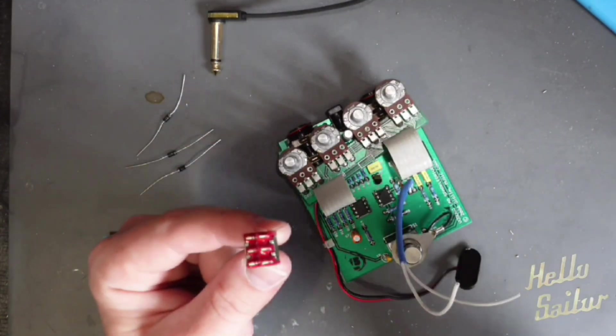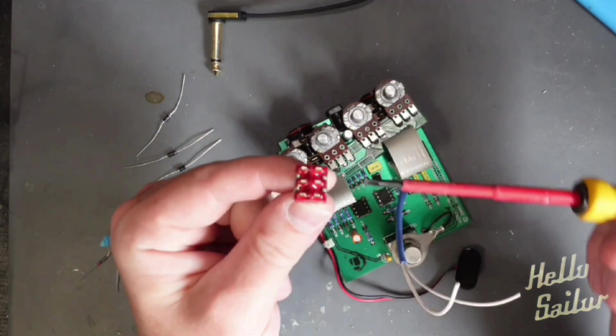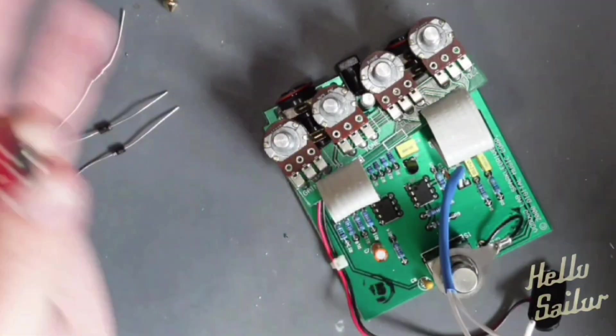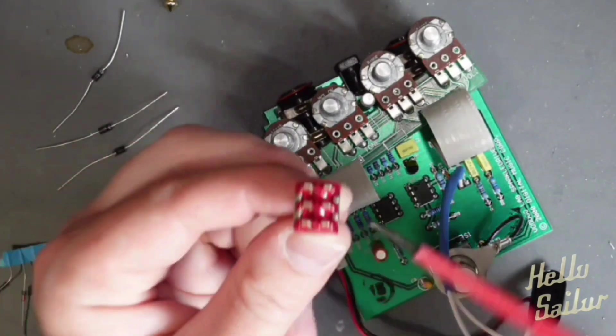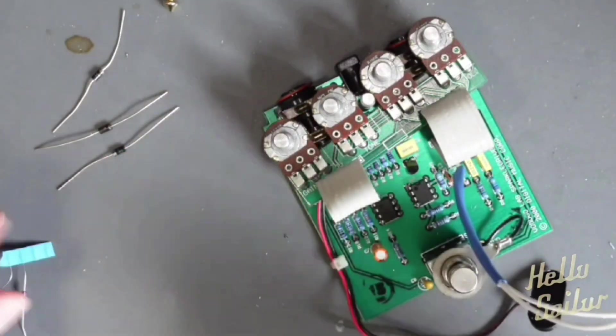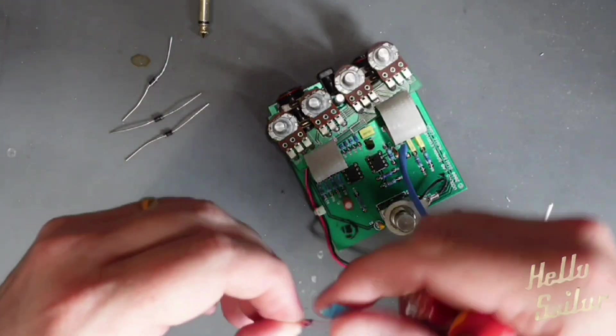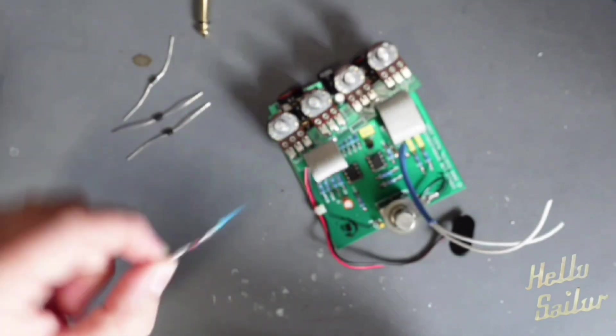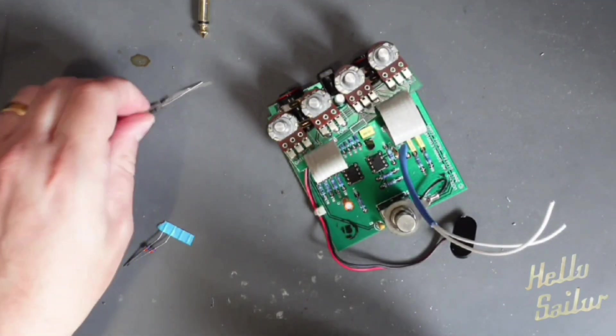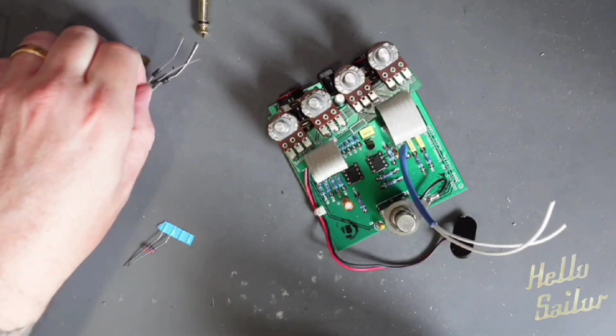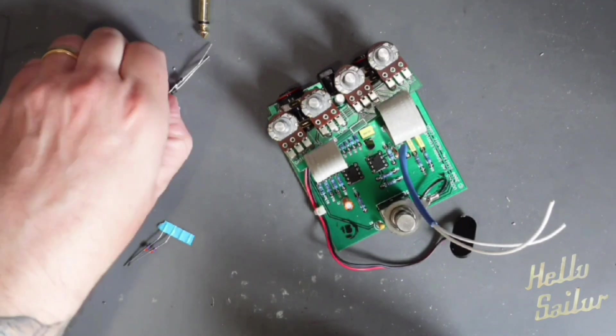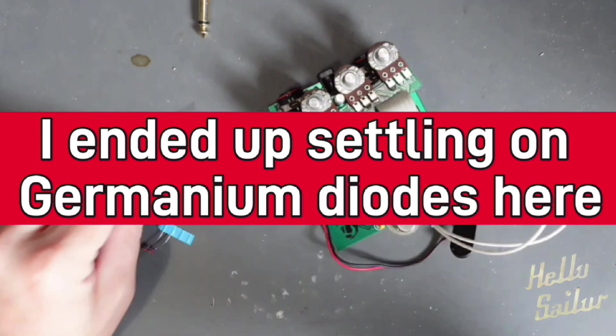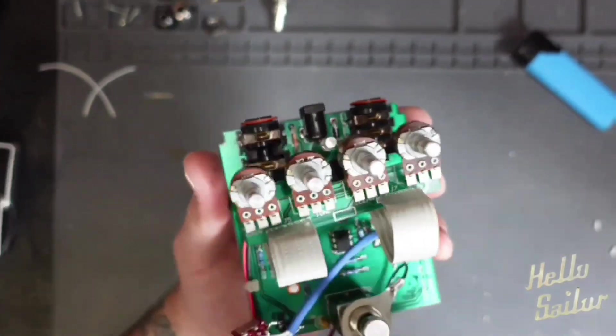What we're going to have is three different sections of clipping. Again, this is all in a vintage overdrive mods for beginners video that we linked before. The center position is going to be no clipping whatsoever, mainly because you get high headroom glassy feel and that's my favorite. Then one side is going to be these diodes which are some really old Japanese ones that used to come in some of the first TS-808s, I can't remember the model number. And then we're going to go asymmetrical with some 1N4007s.